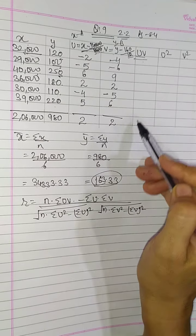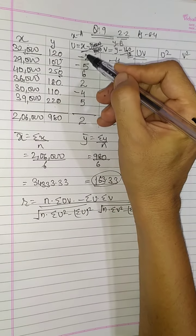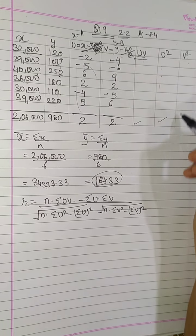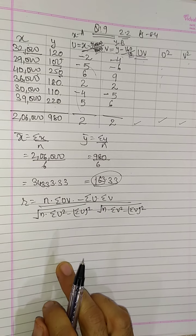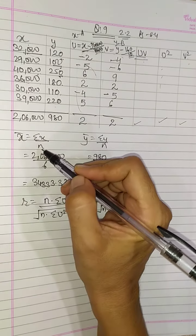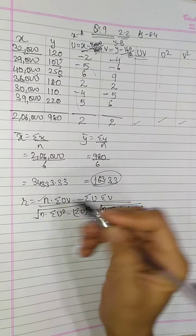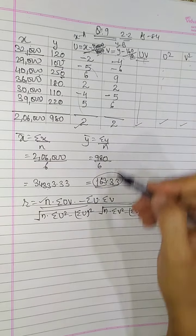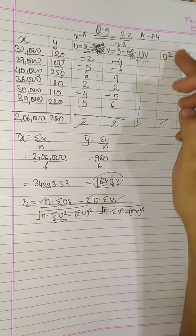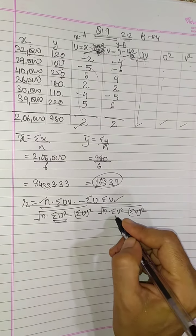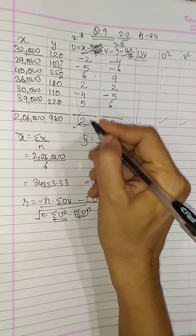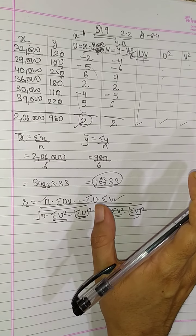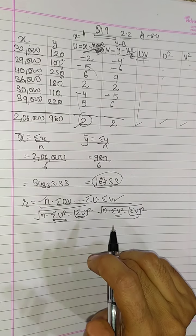UV means multiply U and V column and take total. U square means square this column and take total. V square means square this column and take total, and then simply put it in the formula. N means 1, 2, 3, 4, 5, 6. Sigma UV is UV's total. Sigma U is U's total. Sigma V is V's total. Sigma U square will be this column's total. V square will be this column's total. And here write sigma U and its square, sigma V and its square. That you can simply do. I have explained you in the last sum, so you have to complete this sum.